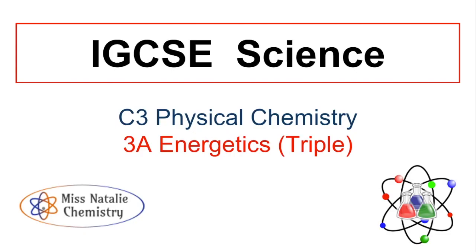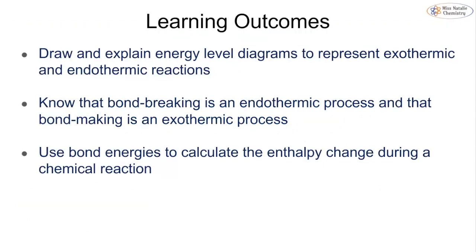This video is going to be looking at topic 3a energetics of the EdXL IGCSE chemistry course, focusing on the triple content. Our learning outcomes are to look at energy level diagrams for both exo- and endothermic reactions, bond breaking and bond making, and how we use bond energies to calculate an enthalpy change.